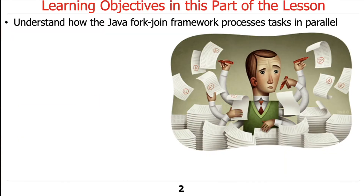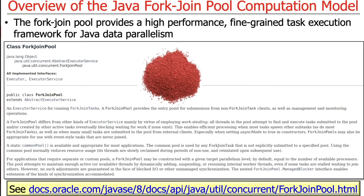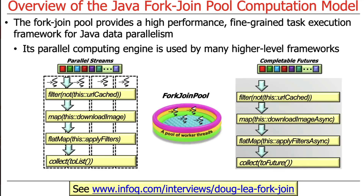So let's talk about how the ForkJoin Framework is used to process tasks in parallel. The ForkJoin Framework — and more specifically a ForkJoin Pool or ForkJoin Thread Pool — provides a high-performance, fine-grained task execution framework for so-called Java data parallelism, and we'll talk a bit about what that means in a second.